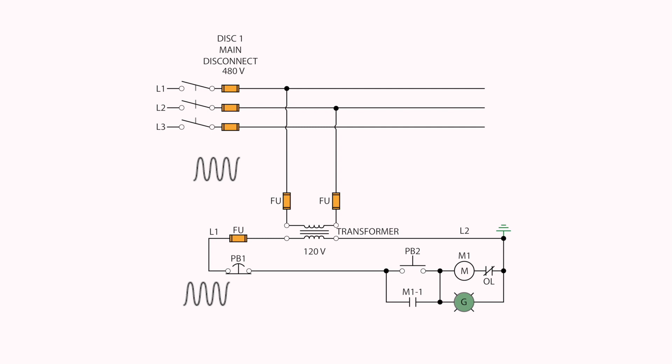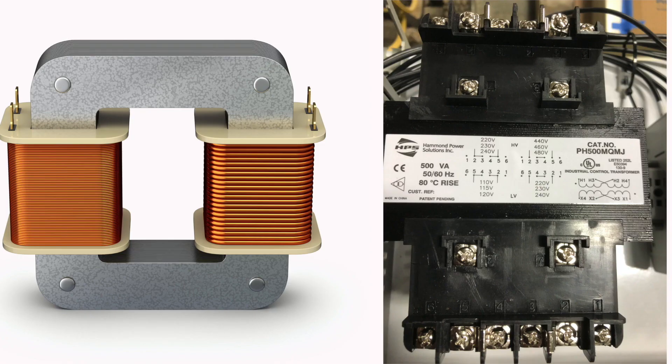Also, a transformer doesn't change power levels between circuits. If you put 10 kilovolt amp into a transformer, you will get 10 kilovolt amp out. There are losses, but the losses are very minimal and can almost be ignored. The average efficiency of a transformer is well over 90%, and that can be attributed to the fact that a transformer has no moving parts.